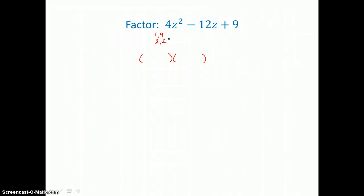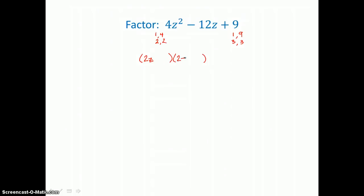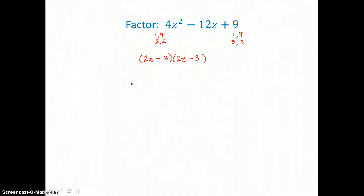And factors of 9 could be 1 times 9 or 3 times 3. So I'm going to try to factor 4Z squared into 2Z times 2Z. And then I can see that if I factor 9 into 3 times 3 and make both negative, I'm going to be able to get my trinomial back.